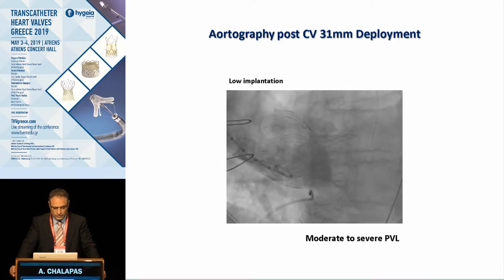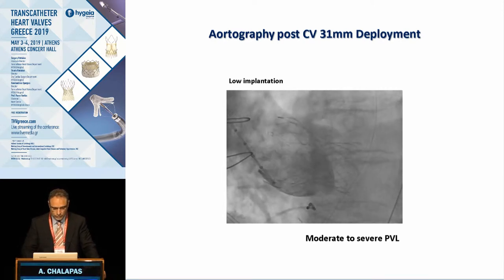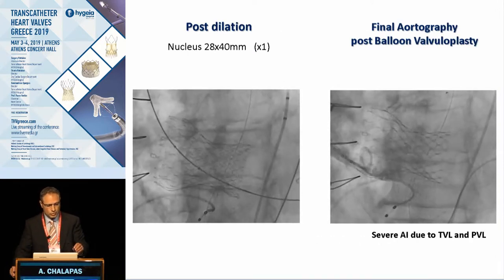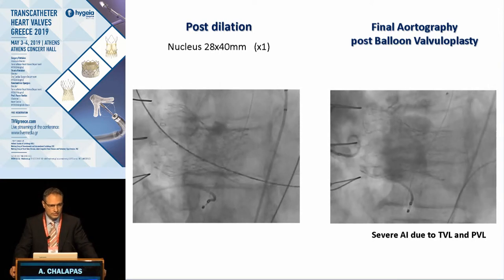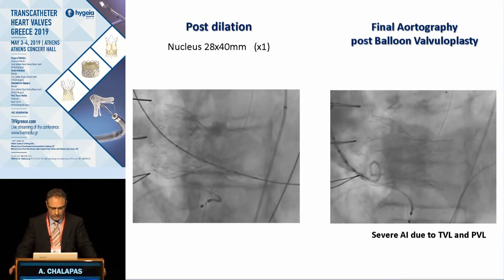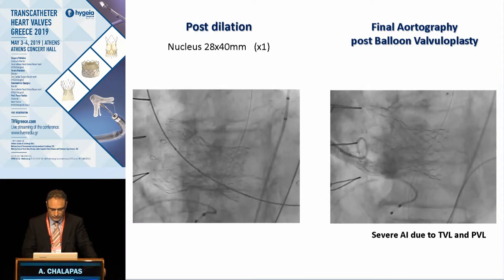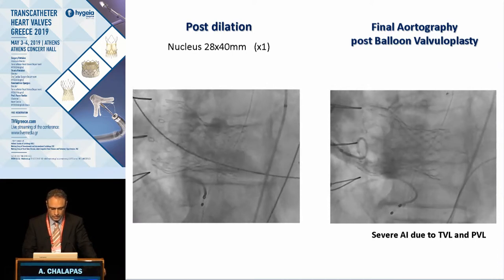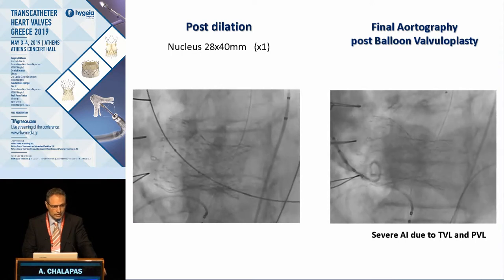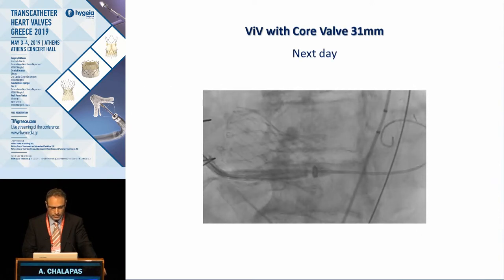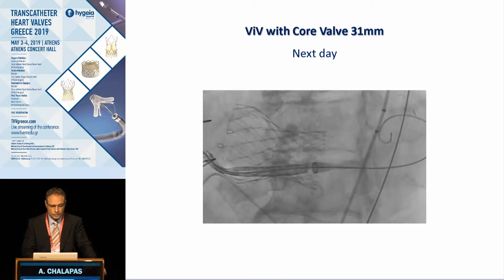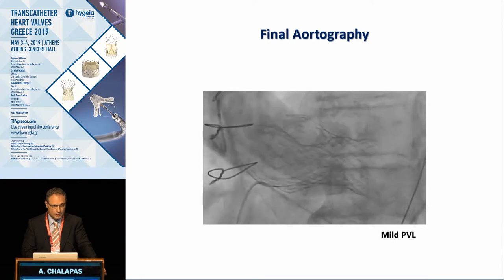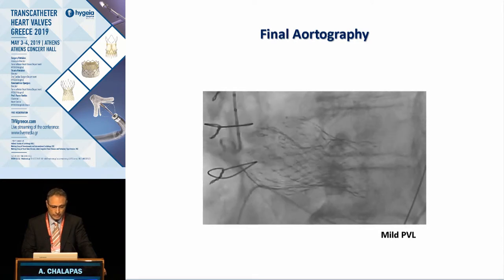The deep positioning was the reason for moderate to severe paravalvular leakage. We decided to proceed with post-dilation using a Nucleus 28 mm balloon. However, the result was not satisfactory, with severe aortic insufficiency due to both paravalvular and transvalvular leakage. Therefore, the next day we proceeded with a valve-in-valve procedure, achieving an excellent hemodynamic result with only mild paravalvular leakage.